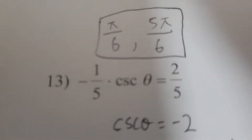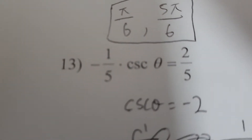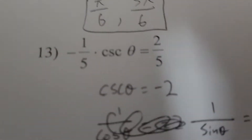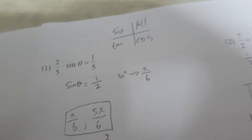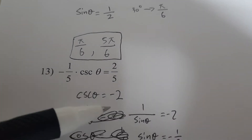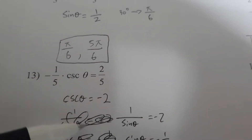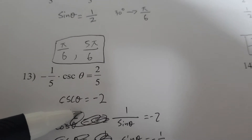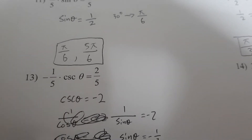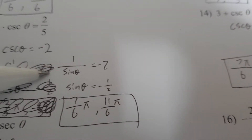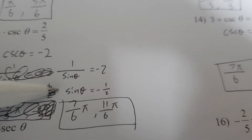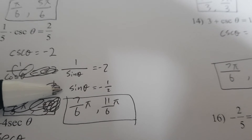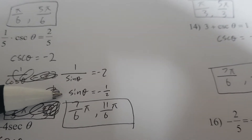So how do we get the theta for this question? We first move negative one over five to the right and we get that cosecant theta equals negative two. We can write that as one over sine theta equals negative two, and we can write that as sine theta equals negative one over two.